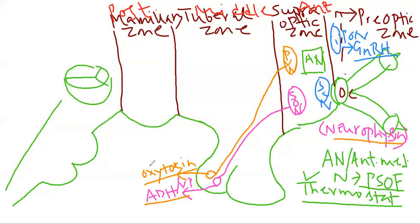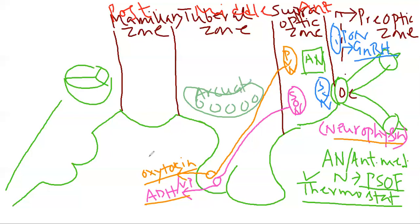Next is the tuberal zone, the middle zone. In the tuberal zone, the important nucleus is the arcuate nucleus, which is a conglomeration of several nuclei — at least five types of cell bodies are present. It is almost semicircular in shape, and from it, the tubero-hypophysial tract originates.